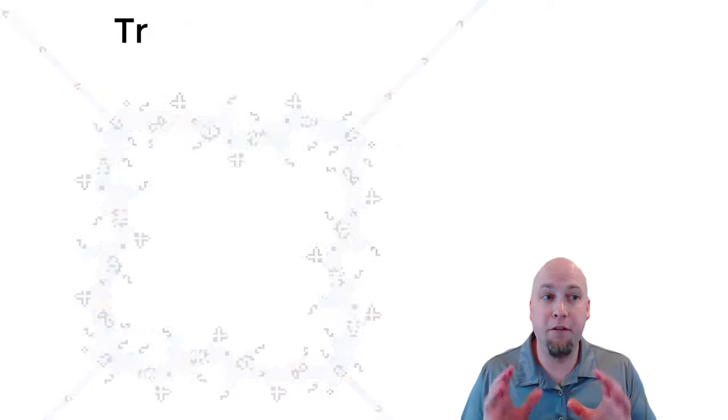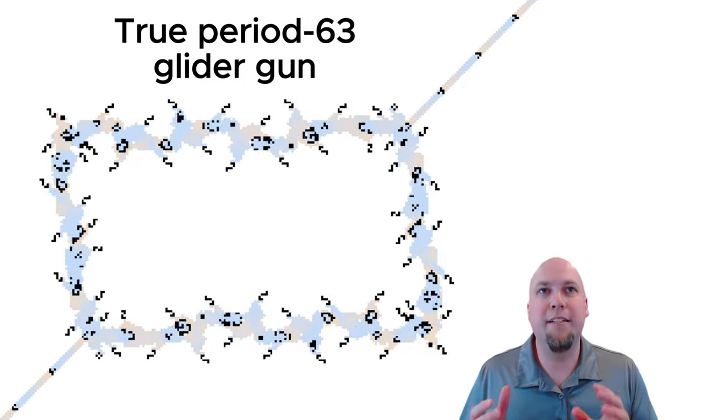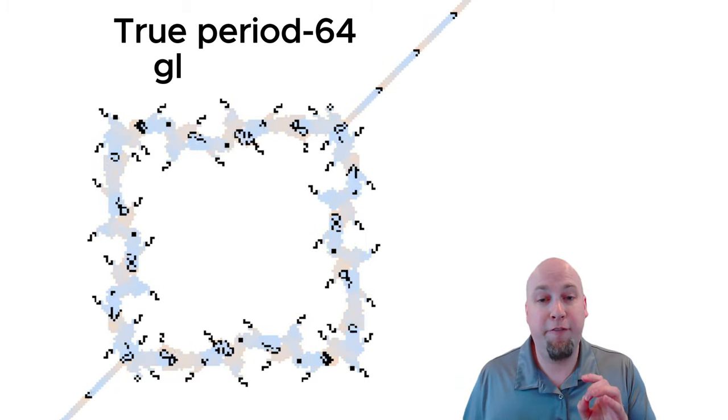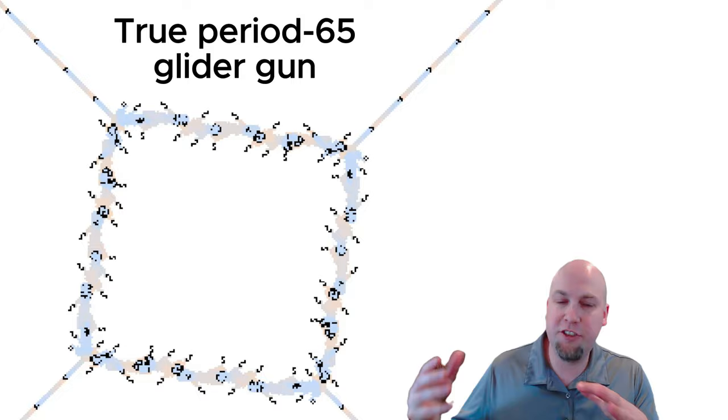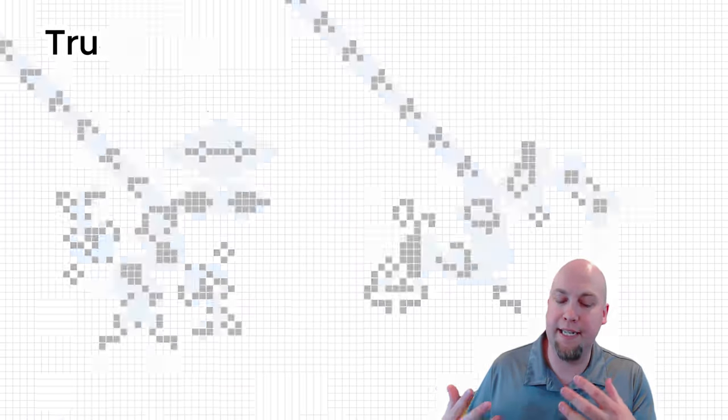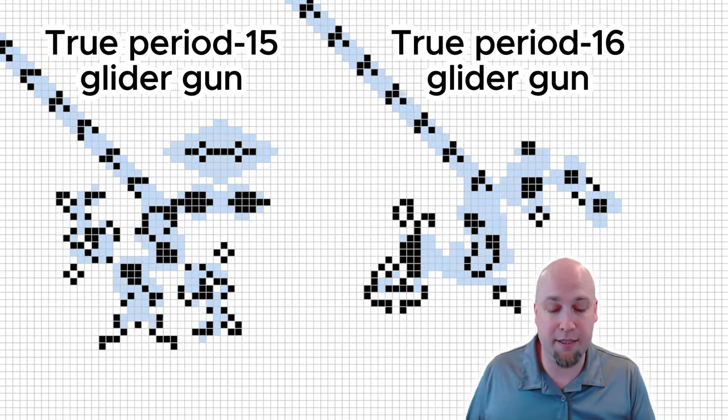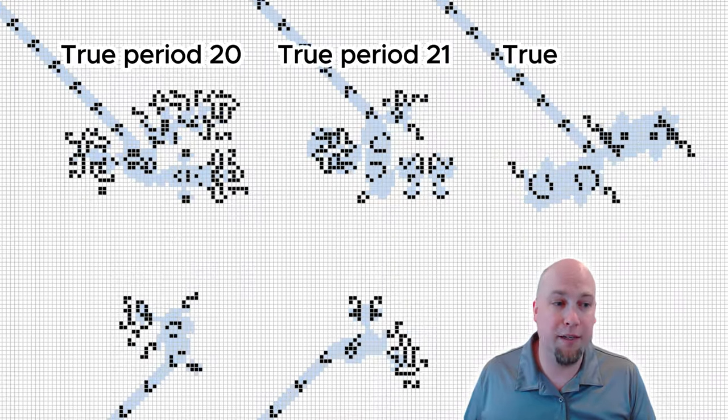And using these and a couple other methods, we can construct glider guns, true period glider guns of any period 48 or larger. So it's just the smaller periods that are still open. And actually, we have lots of sporadic examples like these new period 15 and 16 true period glider guns for smaller periods as well.